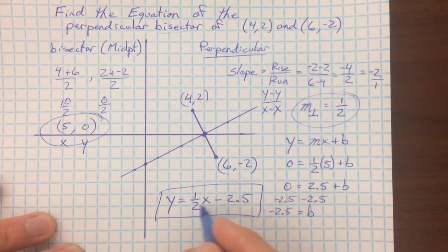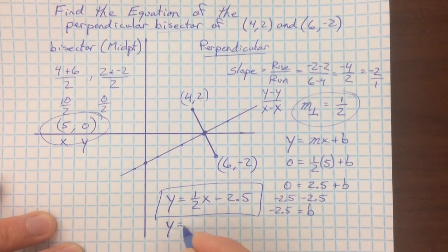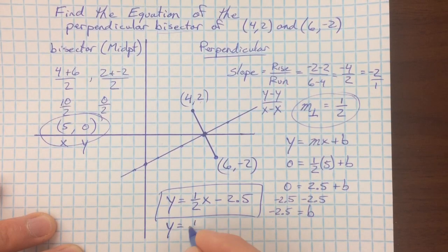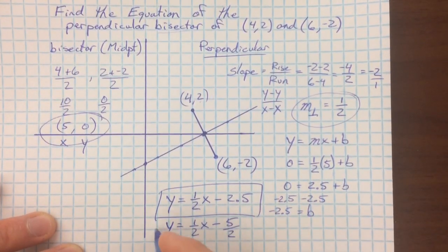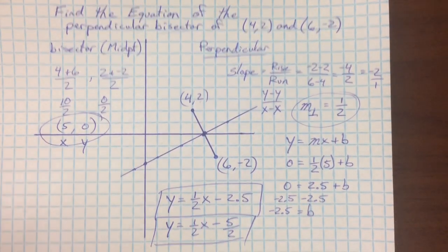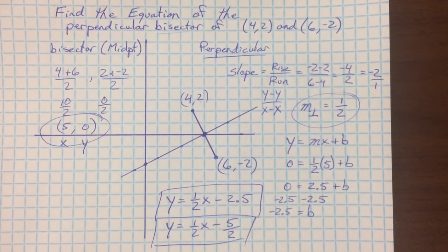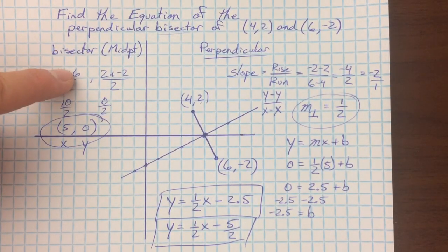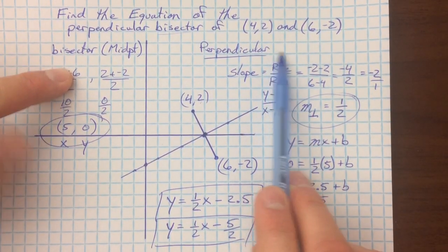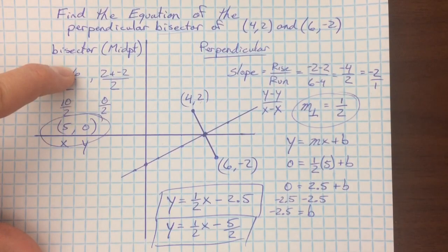Now, it bothers me a little bit that we've got one fraction and one decimal in here. So you could make this 0.5, or you could make the y-intercept 5 halves, just for having the same kind of form in there. And that's how we write the equation of a perpendicular bisector: midpoint, perpendicular slope, find your new y-intercept.